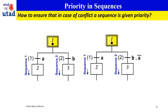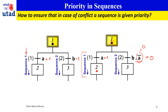Another possibility is how to guarantee priority to one sequence. For instance, if condition A and condition B are both equal to 1, but I want to give priority to sequence 1, I can do AND NOT A on the second transition. When A equals 1, NOT A equals 0, forcing that transition to 0. So the token passes to step 2, meaning sequence 1 got priority in the case of a conflict.